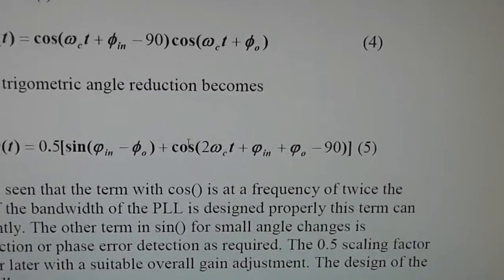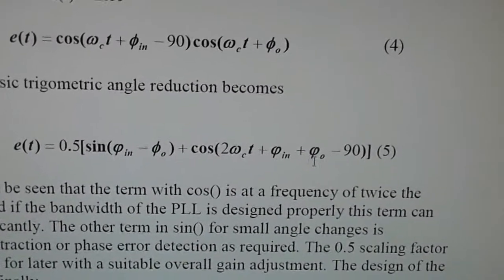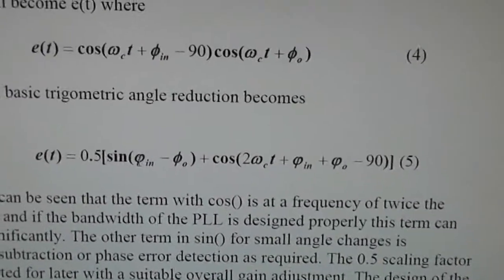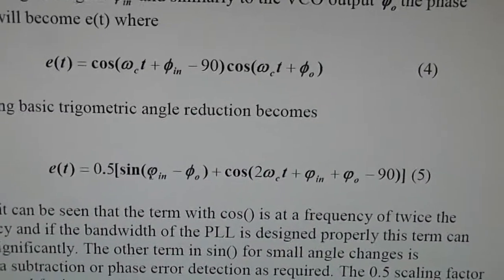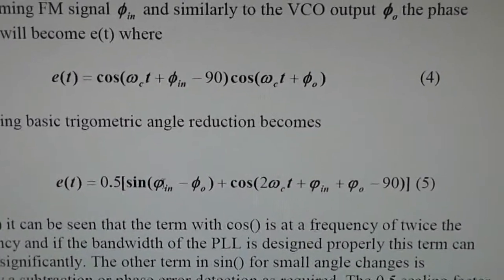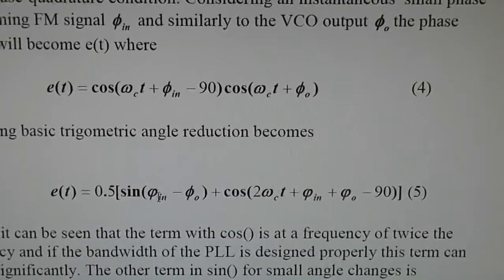Now that bit gets in the right-hand side, gets filtered out, and it leaves us with the sine of phi in minus phi out. Now sine x is approximately equal to x for very small phase changes, so that's like a difference. That's a summing junction, in other words.